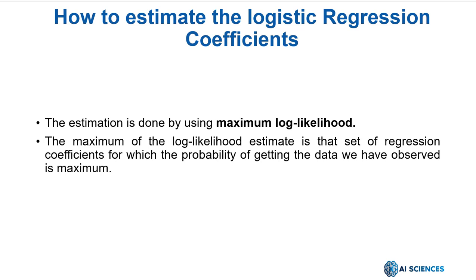There can be an infinite set of regression coefficients. The maximum of the log likelihood estimate is that set of regression coefficients for which the probability of getting the data we have observed is maximum. In other terms, we must make estimates for the coefficients so that predictions are as close as possible to the originally observed value.